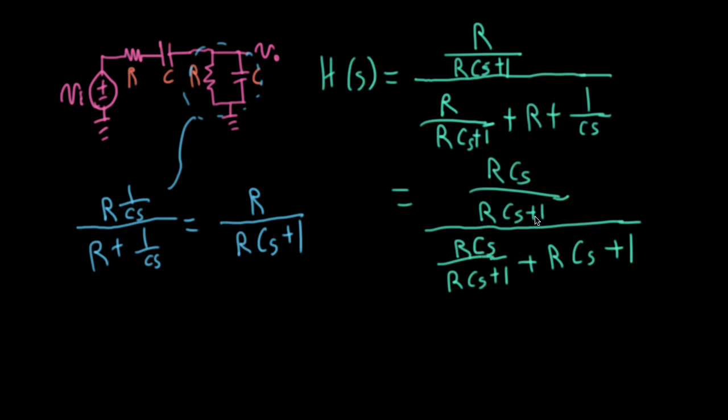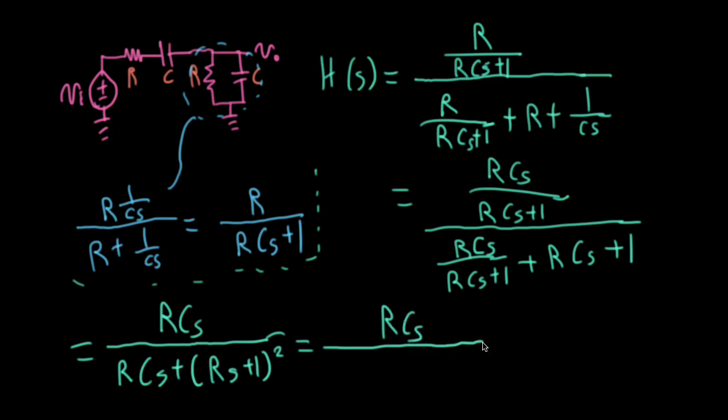Now let's get rid of the RCs plus 1 subfractions here. Let me put some dots here to indicate that this is something else. So I'll say equal RCs in the numerator all over RCs, and then what do I have here? Well, I would have RCs plus 1 times itself. So I square that.